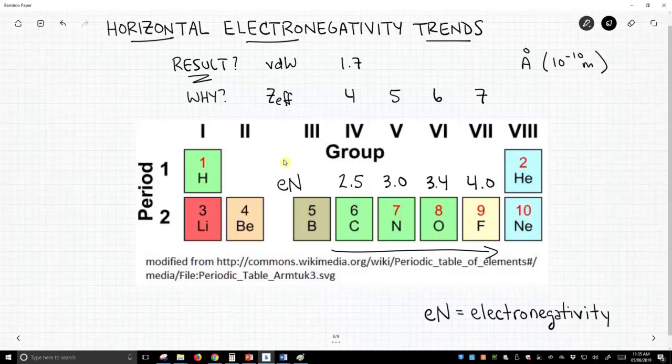Carbon has a radius of 1.7 angstroms. We'd expect nitrogen to be smaller, and it is at 1.55. Oxygen is a bit smaller.